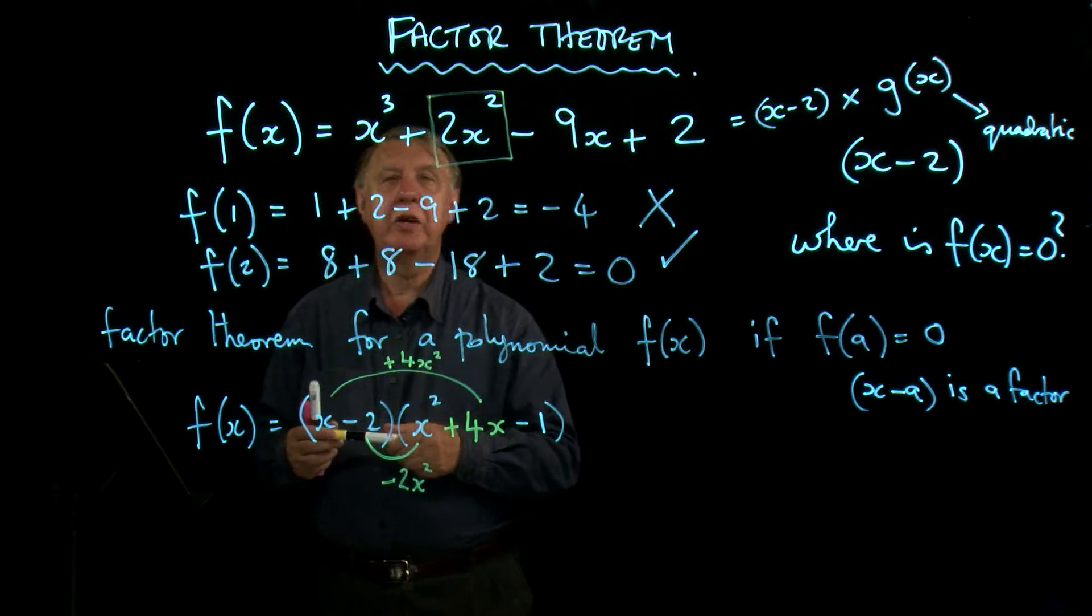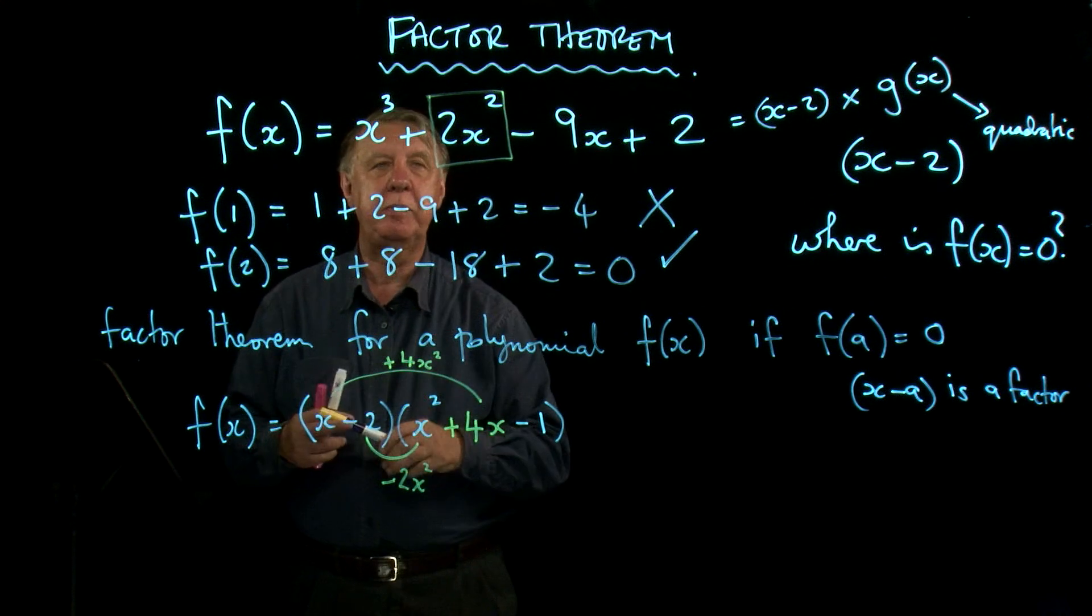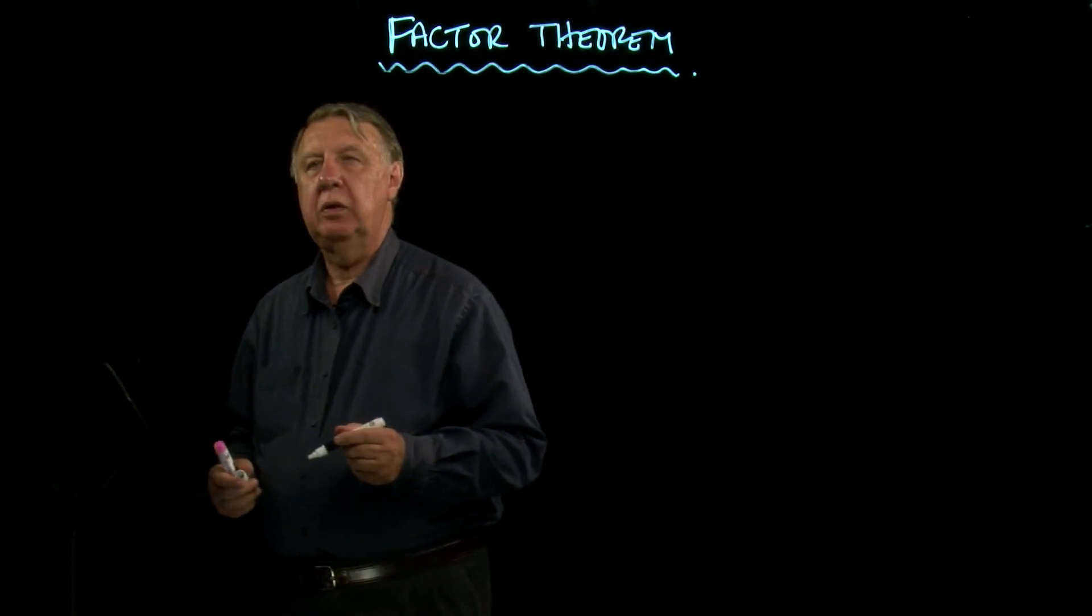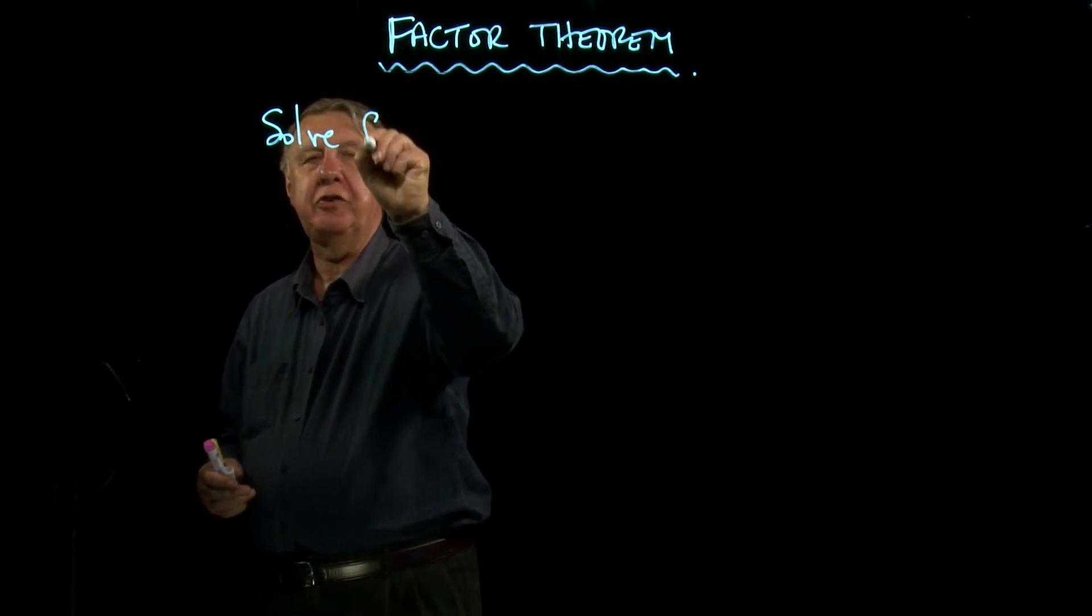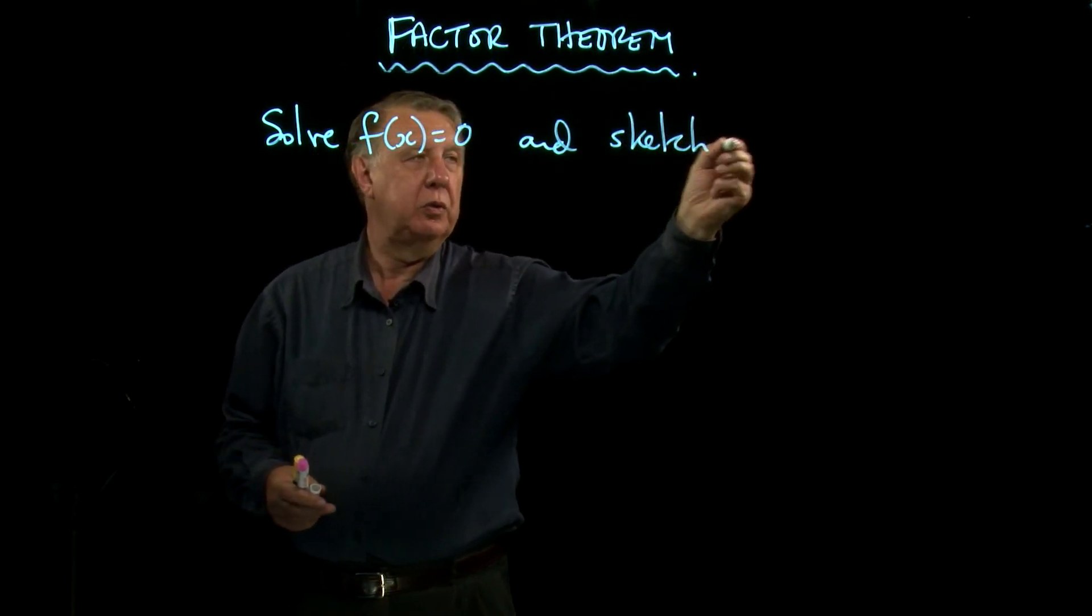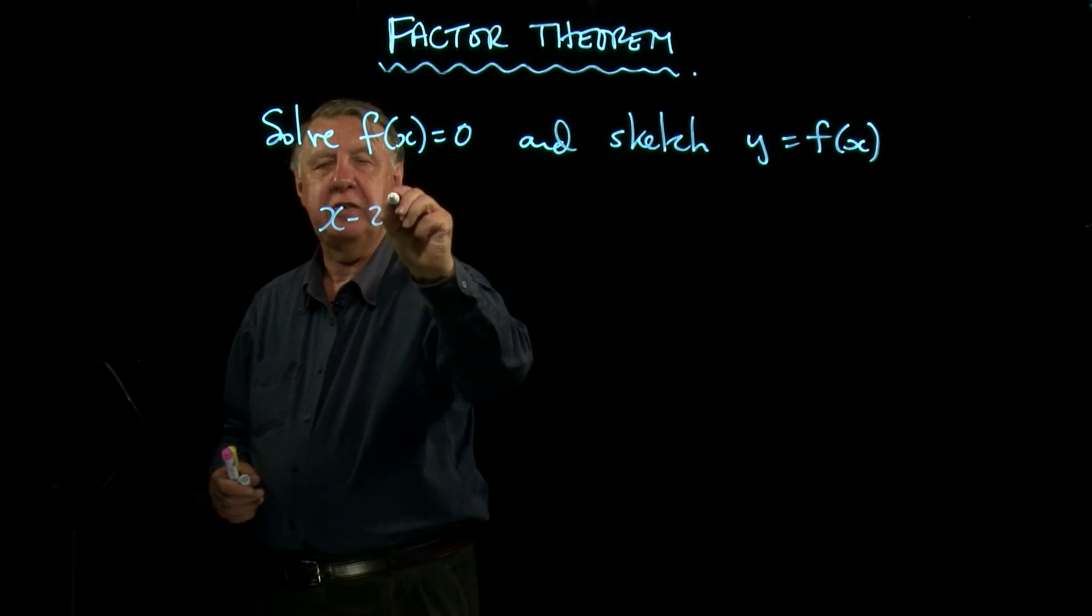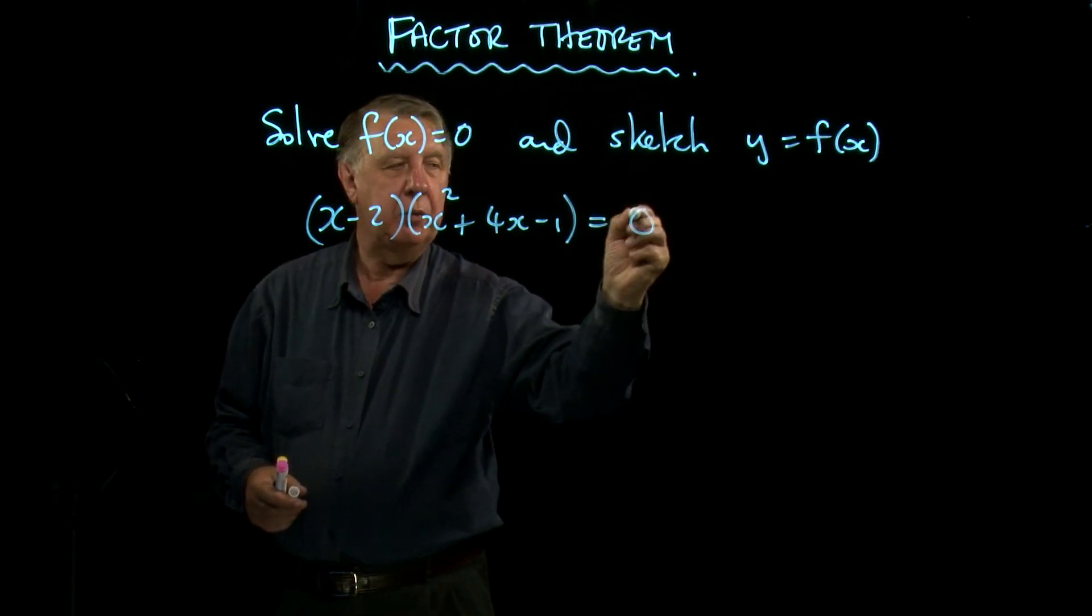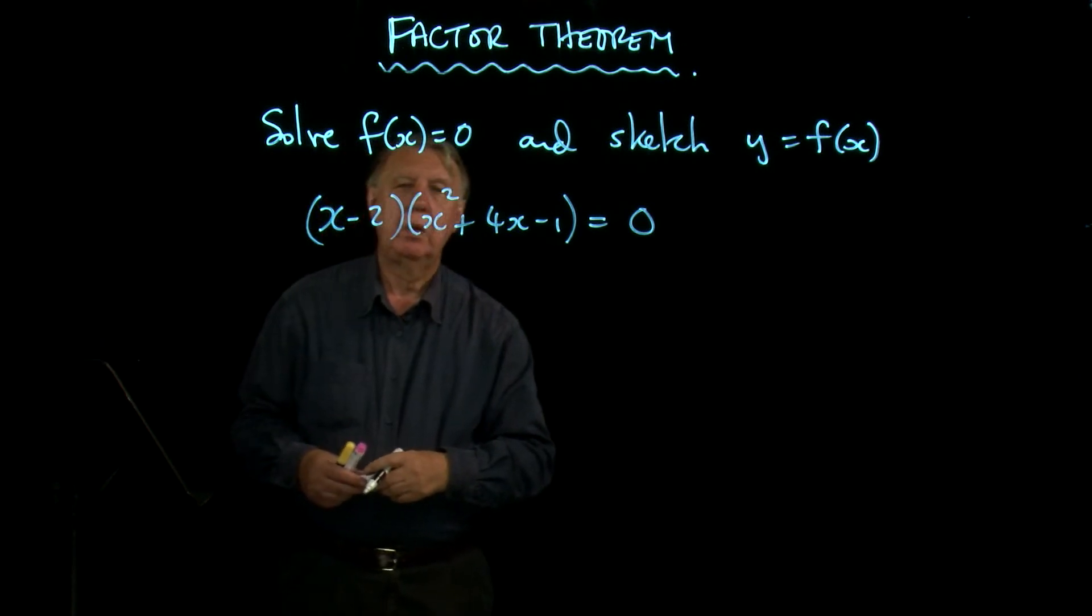I'm now in a position to look at something else that they may have asked me to do with this function. In the exam situation, they might say, solve f(x) = 0 and sketch y = f(x). So at this stage, I've got my factors: (x - 2)(x² + 4x - 1). And I want that to be equal to 0. So clearly x = 2 is one solution.